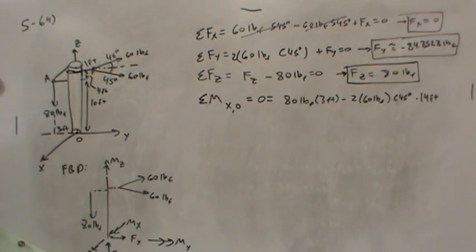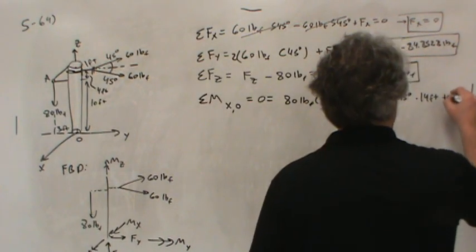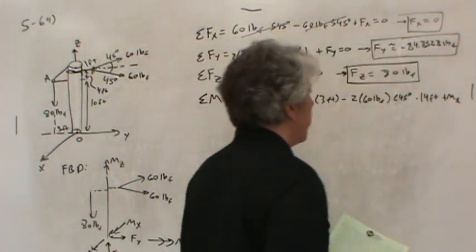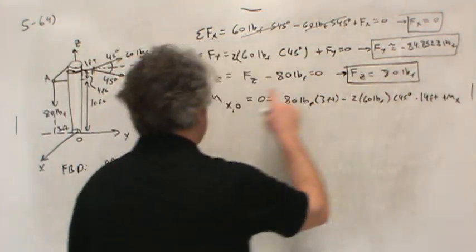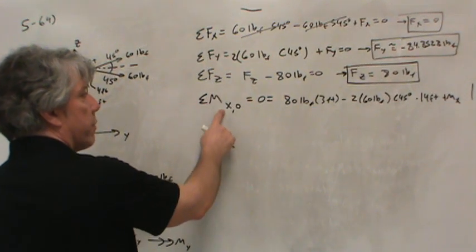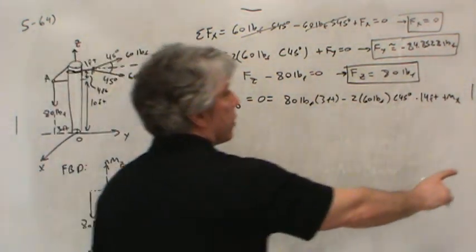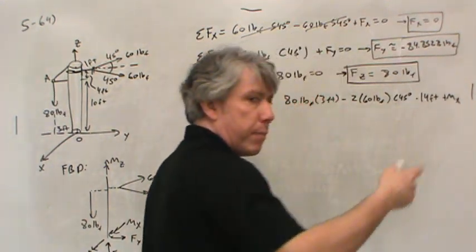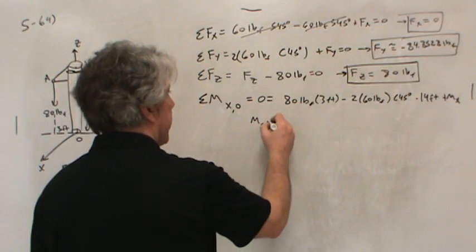Is there anything else? Well, yes, there is. There's a moment from the ground at the base that is MX. And I've drawn it in the positive direction. So, plus MX. Don't be confused. Just like this FZ is not that FZ, this MX is not that MX. This is the sum of the moments in the X direction about the origin O. This is the moment applied by the ground onto the base of the pole. So, now we can solve for MX.